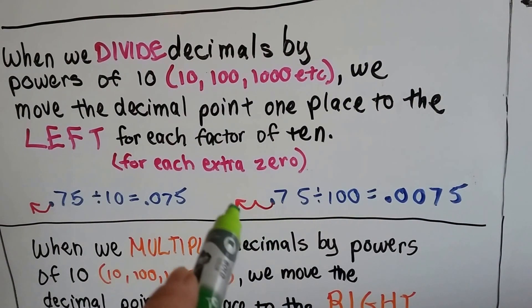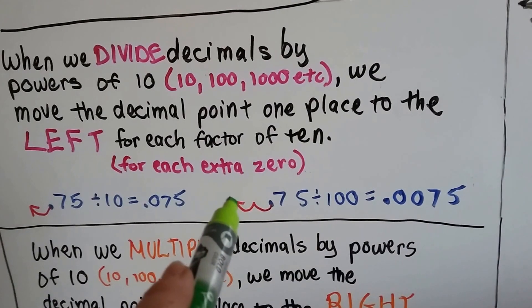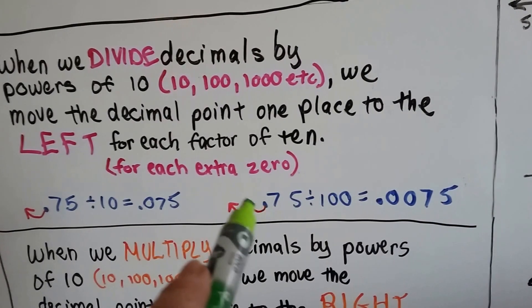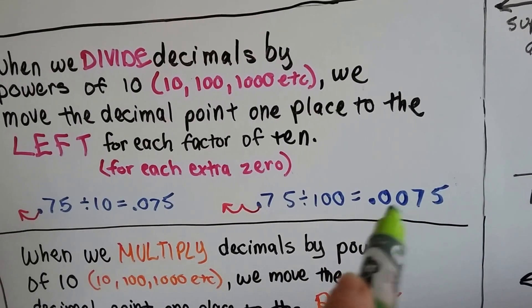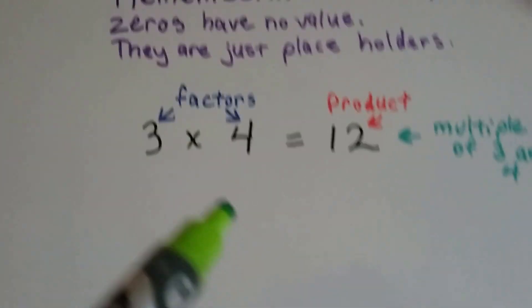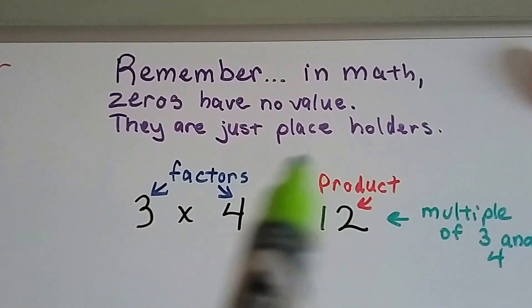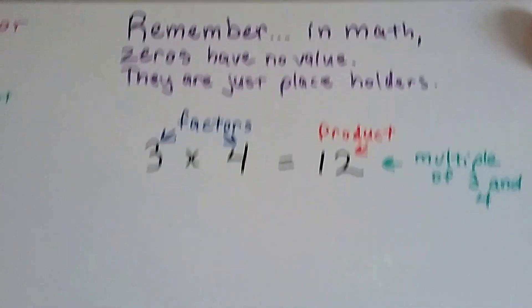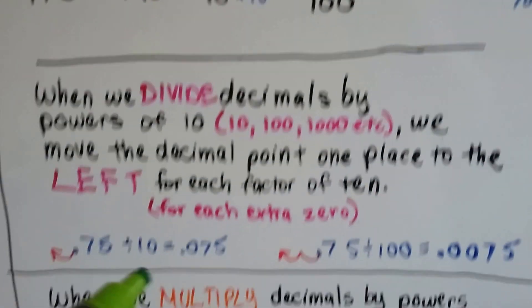Now we're going to do 100. There's two zeros. So it's going to move two places, 1, 2. Now, the decimal point is way over here. And we have to put two zeros as placeholders. Remember my rule? In math, zeros have no value. They're just placeholders. Well, they love being placeholders.